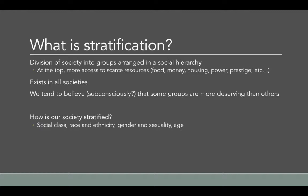Stratification exists in all societies — it could be based on social class, race and ethnicity, gender and sexuality, or age. You might also see societies stratified by religion or some other characteristic. In this lecture, we're going to focus on social class, race, ethnicity, and gender, while also recognizing other axes of stratification. The book talks about age; sexuality is not really mentioned in the book, but it is certainly another axis of stratification, particularly in the United States.